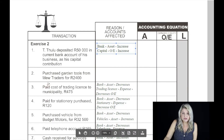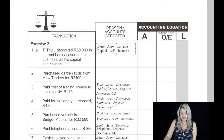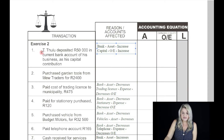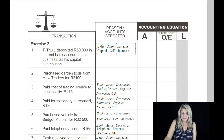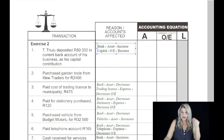Exercise number two, number one. The first transaction reads: T. Tula deposited 15,000 Rand into his current bank account for his business as a capital contribution. The two accounts that are affected by this transaction are bank and capital. Bank is an asset, so it increases because money is being paid into the bank account, and capital, which is an owner's equity account, also increases because the owner is making a capital contribution.